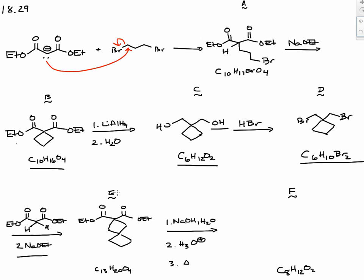In the last sequence, converting E to F, we're going to do a saponification, then a protonation of the sodium carboxylates, and then the final step with heat is the decarboxylation. So we're essentially cleaving off one of these esters. Our final product is going to be the carboxylic acid — specifically, this spirocyclic biscyclobutane carboxylic acid.